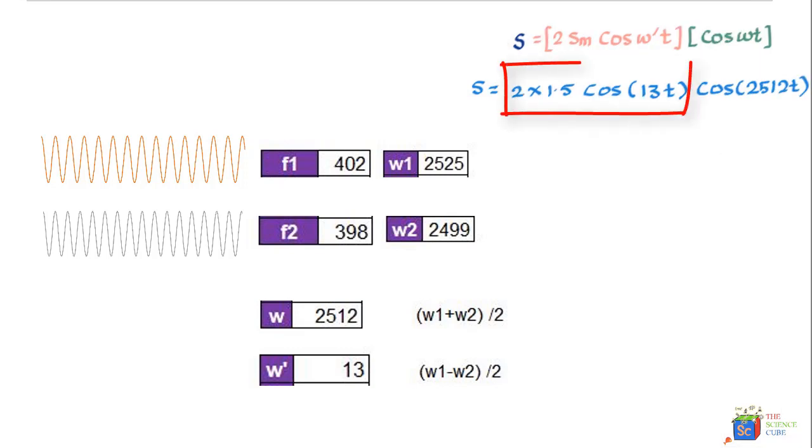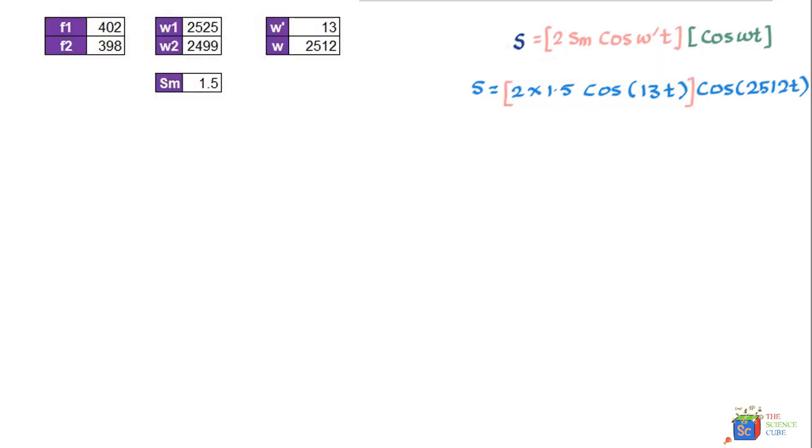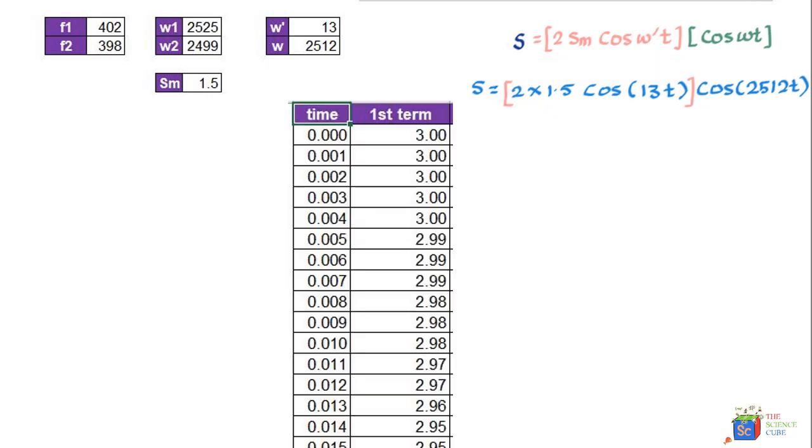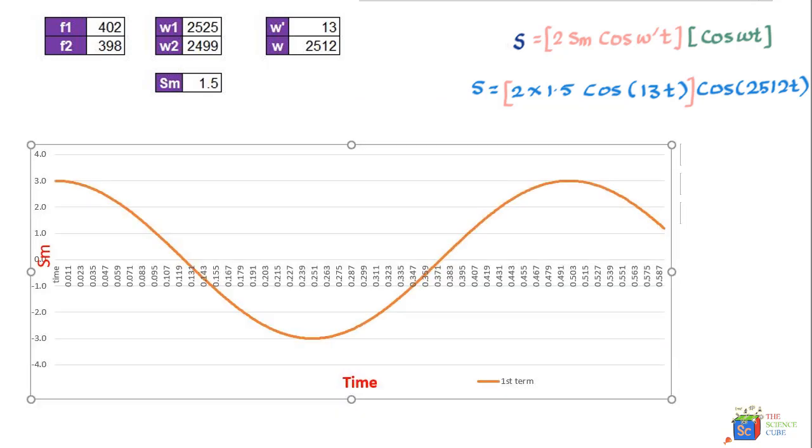Let us take this part and we call it the first part of the equation, and draw a plot of this versus time. To do that, we tabulate the values of this part for various time values, and this is what we get. Then if you make a graph, what you get is a smooth, slow, elongated graph like this, which makes a lot of sense since this frequency is so low that the wave will be long. You can see that if this corresponds to 402 and this to 398 hertz, the difference is 4, and if you divide by 2, the frequency is just 2 hertz, and in angular frequency terms it shows as 13.